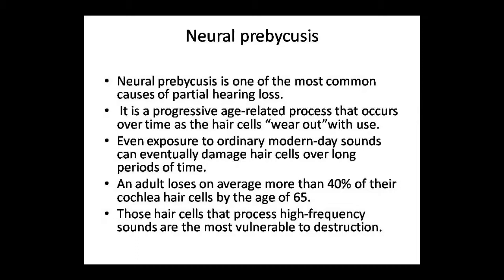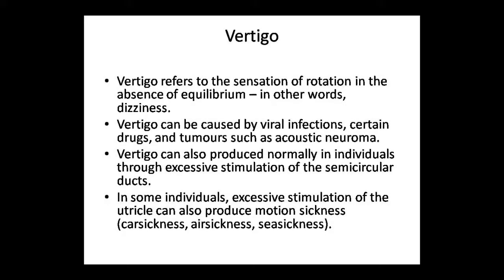The third problem is vertigo — also called chakkar or dizziness. Vertigo is a sensation of rotation when equilibrium is lost. When you have vertigo, you cannot balance yourself, you cannot stand up, and you have to hold onto something. It is a sense of rotation in the absence of equilibrium — your balance is gone and you cannot stay stable. Vertigo can be caused by infection, drugs, tumors such as acoustic neuroma.